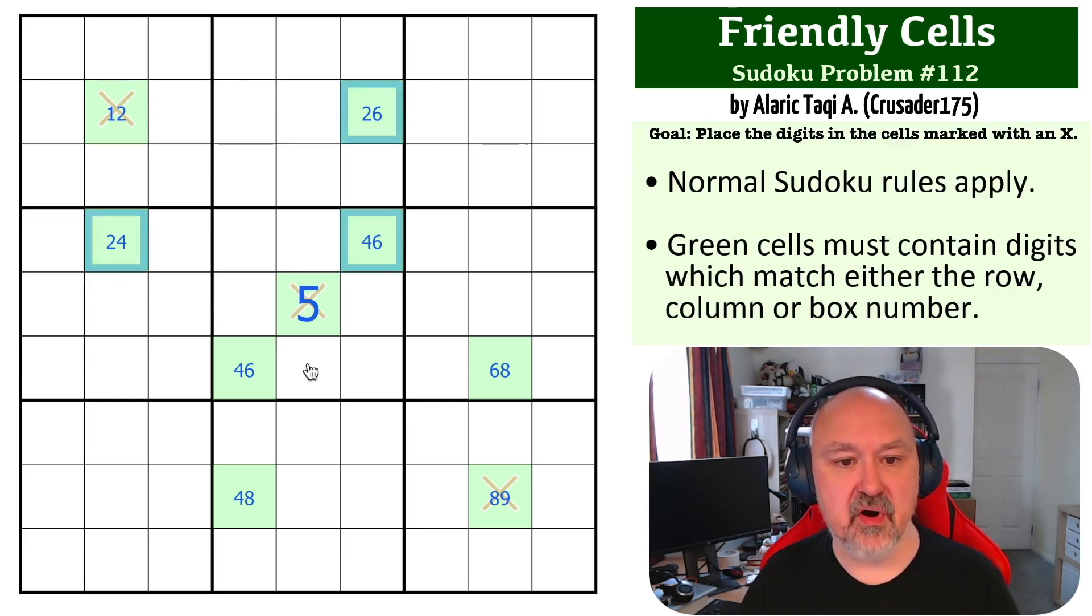This pattern right here means that because this is a 4 or a 6, if this is a 4, this would be a 2. If this is a 6, this would be a 2. Which means any cell that sees both of those cells cannot be a 2. So this cannot be a 2 and this must be a 1. And the same is true here.